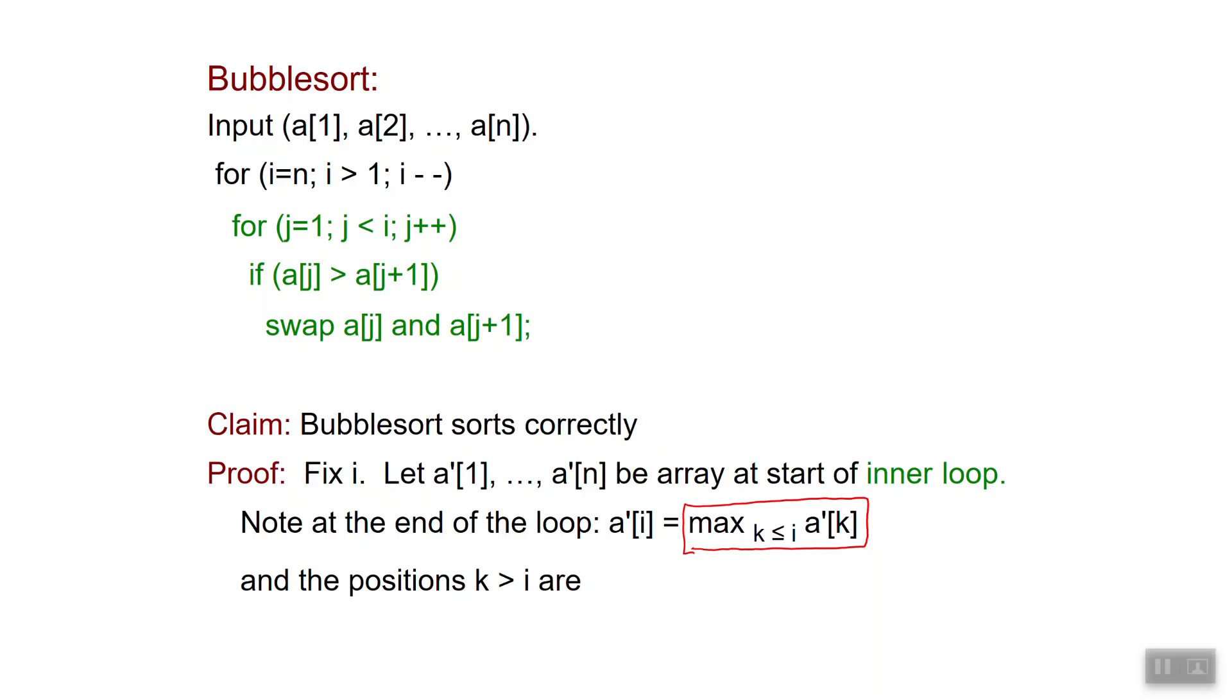And the positions which are after i are not touched by the algorithm by the way the algorithm is done. Since in the outer loop the index i goes from n down to 1, the array in the end is sorted.